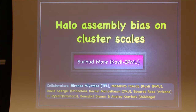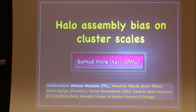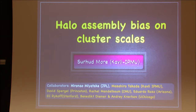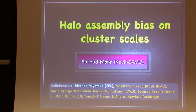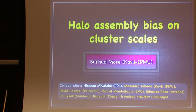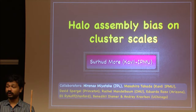Thank you to the organizers for this invitation and thanks to Andre for introducing the topics I'm going to talk about. He made the case that there is halo assembly bias predicted by simulations. The question is: can we see it observationally? Many people including people in this room have tried to look for halo assembly bias, which is a dependence of the large-scale clustering of halos on a property other than mass.